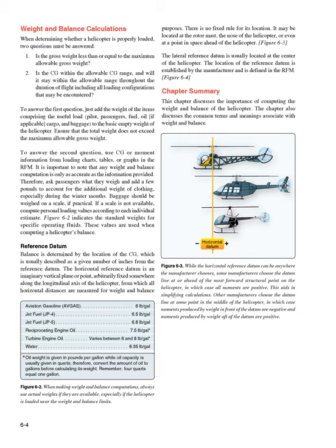Chapter Summary: This chapter discusses the importance of computing the weight and balance of the helicopter, and the common terms and meanings associated with weight and balance. When the datum line is at or ahead of the most forward structural point on the helicopter, all moments are positive, which aids in simplifying calculations. Other manufacturers choose the datum line at some point in the middle of the helicopter, in which case moments produced by weight in front of the datum are negative and moments produced by weight aft of the datum are positive.